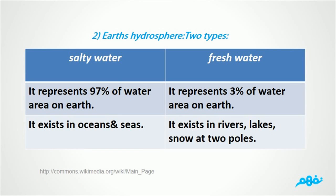2. Earth's hydrosphere. It has two types: 1. Salty water, which represents 97% of the water area on Earth and exists in oceans and seas. 2. Fresh water, which represents 3% of the water area on Earth and exists in rivers, lakes, and snow at the two poles.